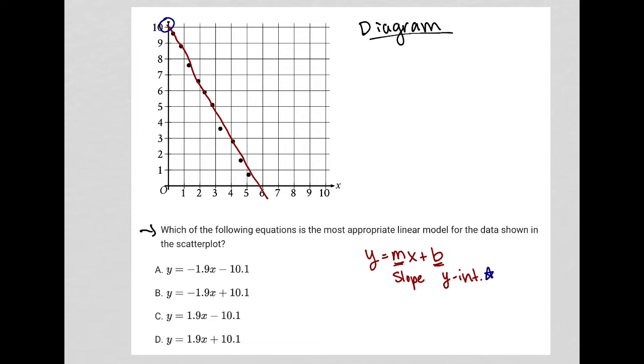Looking at the answer choices, this says negative 10.1. That's definitely incorrect. We're at more like positive 10.1, which is what choice B says and what choice D says, but choice C also has negative 10.1. Based upon just the y-intercept alone, we've gotten down to a 50-50 and crossed out two answer choices.